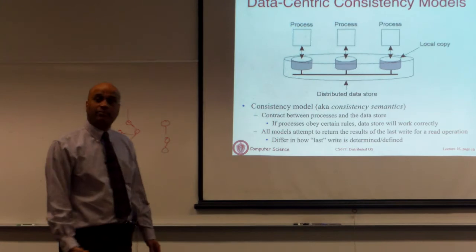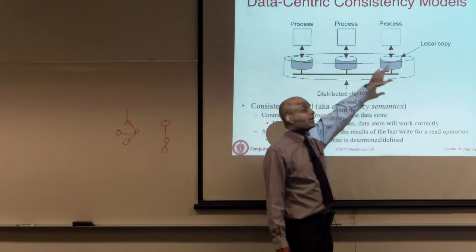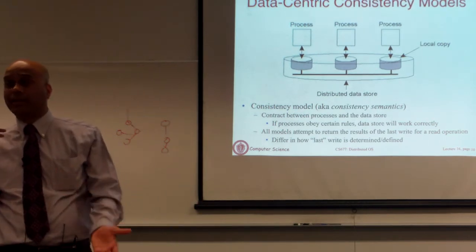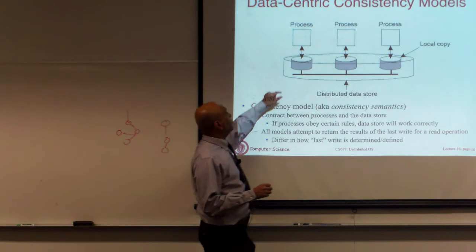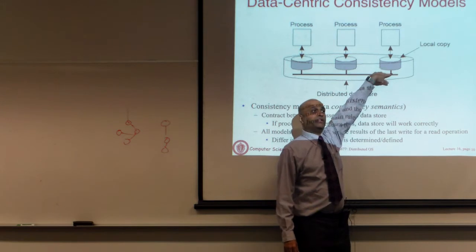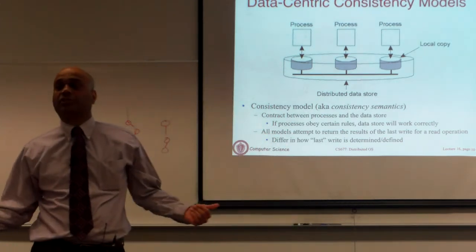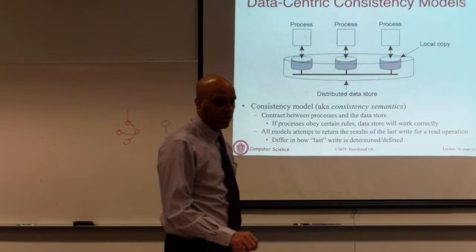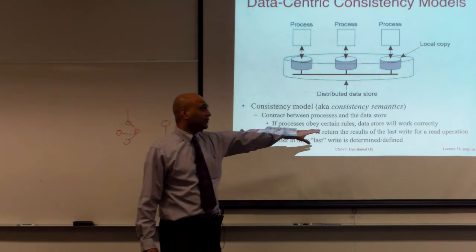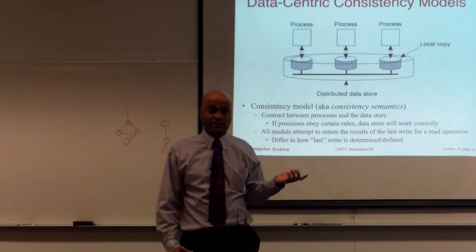This is the model to keep in mind: there are copies of the data replicated across multiple sites, users are accessing data from whichever replica they want, and they can update or read it. If some process updates one replica and then very soon after tries to read the same data from another replica, what should they see? Ideally, with strict consistency, you should see the most recent version of the object, but there are many other options.